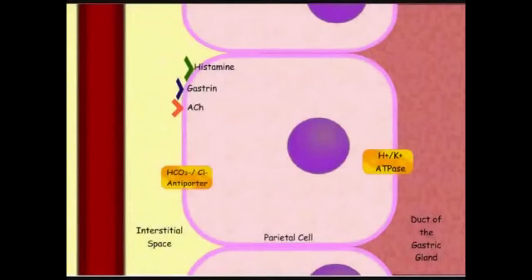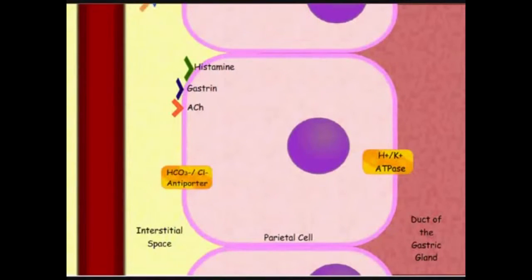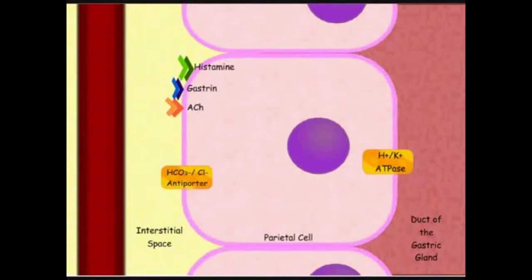In order to protect the cells from the damaging acidity of hydrochloric acid, the parietal cell has to reduce the components of hydrochloric acid separately. Histamine, gastrin, and acetylcholine will bind to receptors on the parietal cell, initiating the hydrochloric acid production process. All three chemicals have to bind to the cell in order for this process to occur; otherwise hydrochloric acid production won't happen.